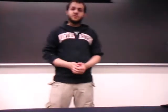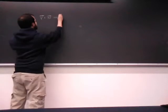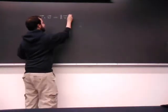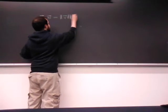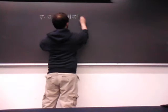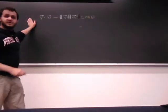Welcome. Today we'll be proving the formula for a dot product that we went over in class — namely, the one that says that the dot product of two vectors V and W is equal to the magnitude of V times the magnitude of W times the cosine of the angle in between.